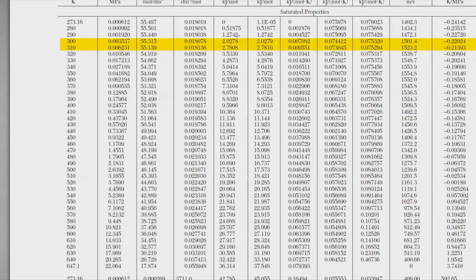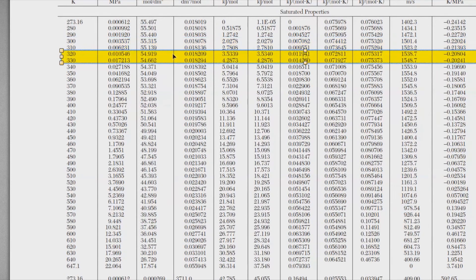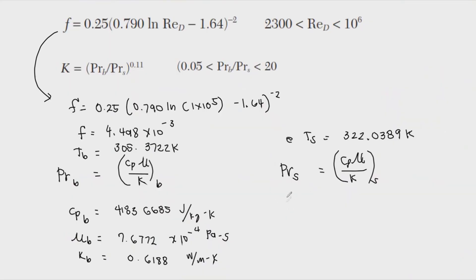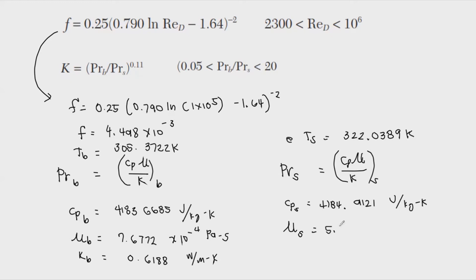For the surface temperature condition, the properties are: Cp_s = 4184.9121 J/(kg·K), viscosity μ_s = 5.5917 × 10⁻⁴ Pa·s, and thermal conductivity k_s = 0.6420 W/(m·K). Water at higher temperature gives a slightly higher thermal conductivity around 0.642.